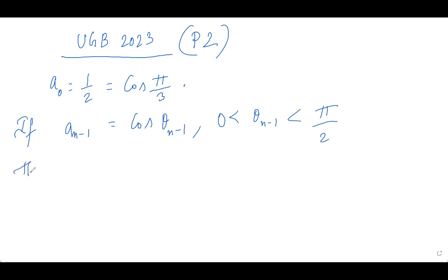So just induction. So then A_n is nothing but root over of 1 plus A_{n-1} divided by 2 and that is equal to root over of 1 plus cos theta_{n-1} by 2.